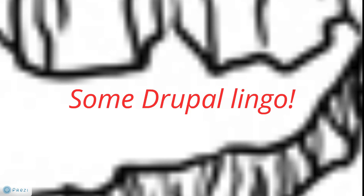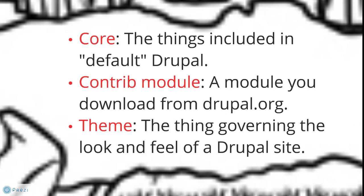The second part of the second quest is looking at some Drupal lingo so you can understand what geeks are saying. First, you'll hear the word 'core' or 'Drupal core,' which means the things included in default Drupal — what you get when you download Drupal from Drupal.org. Second is 'contrib module' or 'contributed module' — these are modules you download from Drupal.org and add to Drupal core to create or change site functionality.